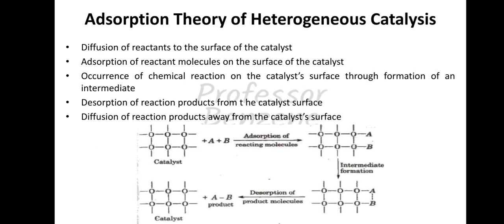The adsorption theory of heterogeneous catalysis involves these steps: adsorption of the reactant molecules on the surface of the catalyst, occurrence of a chemical reaction on the catalyst surface through formation of an intermediate, and then desorption of the reaction products from the catalyst surface.